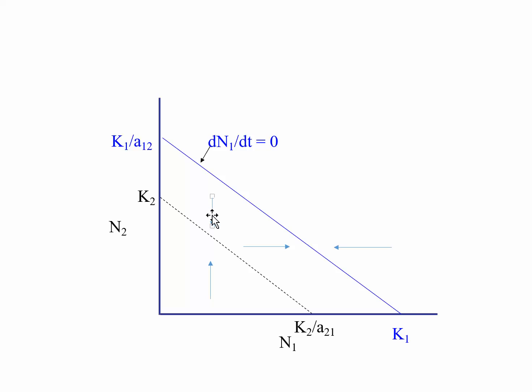They only have reference to the prediction of the dynamics of the species for which it is the zero net growth isocline, and no other. We can make a prediction about what would happen to species two — if species two is below that carrying capacity representing the joint abundance that fills the carrying capacity of species two, species two would increase. I'm going to pause now, change the figure a little bit, and continue on.